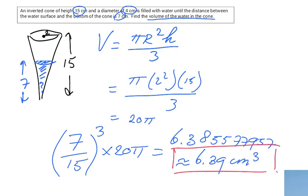So it's about similarity. I first found the volume of the big cone, then multiplied that by the scale factor to the power of 3 to get the volume of the smaller cone.